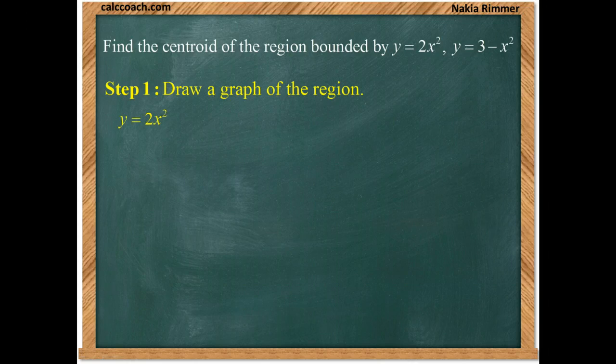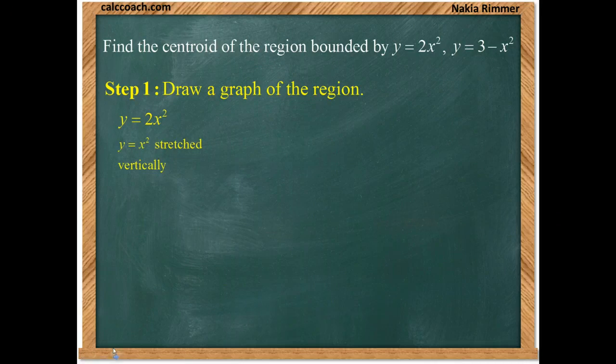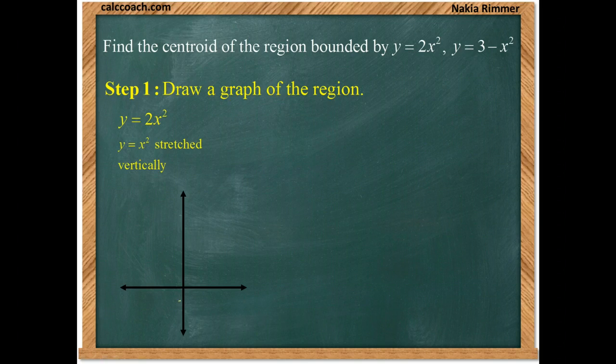Let's look at the first one, y equals 2x squared. Well, it's just a parabola, y equals x squared, that's been stretched vertically. So that's just going to be an upward opening parabola that hits at the origin. It has a vertex at the origin.